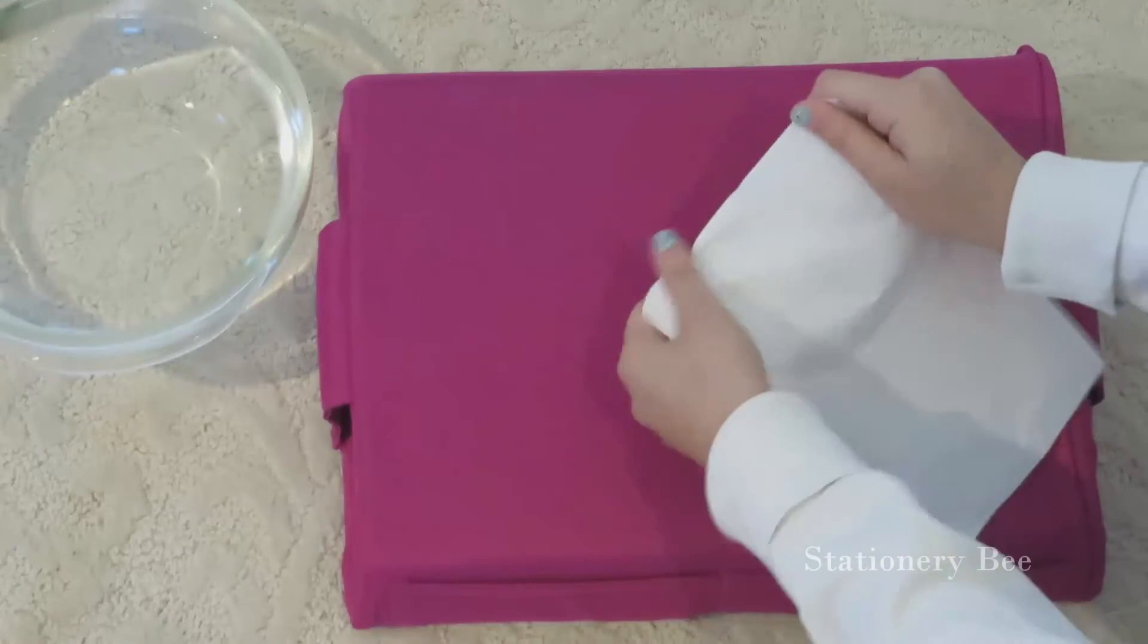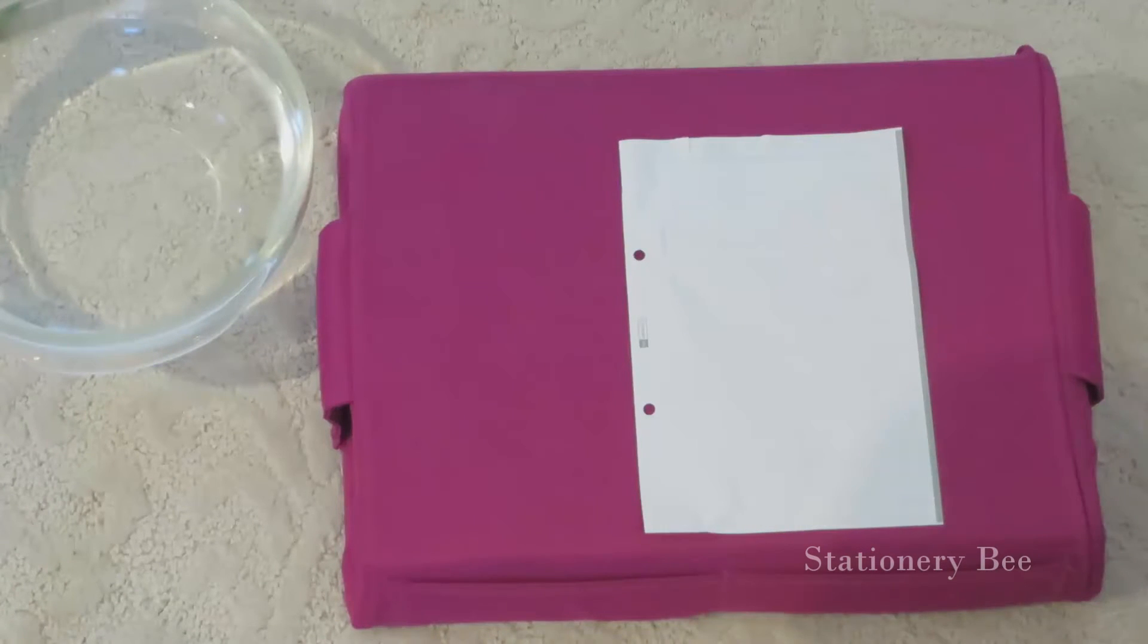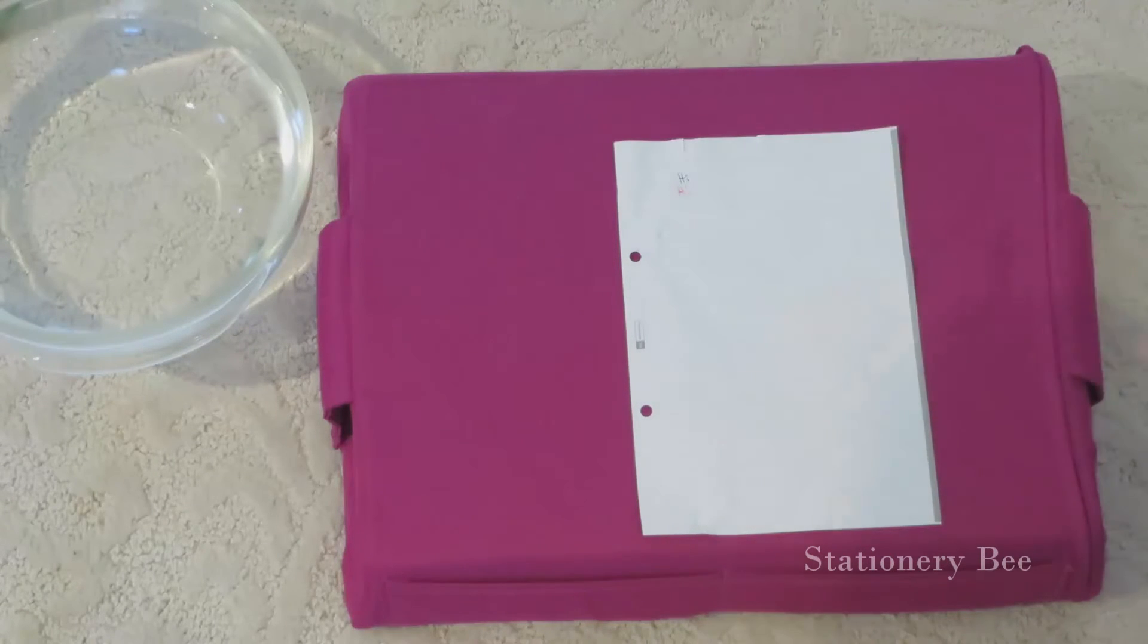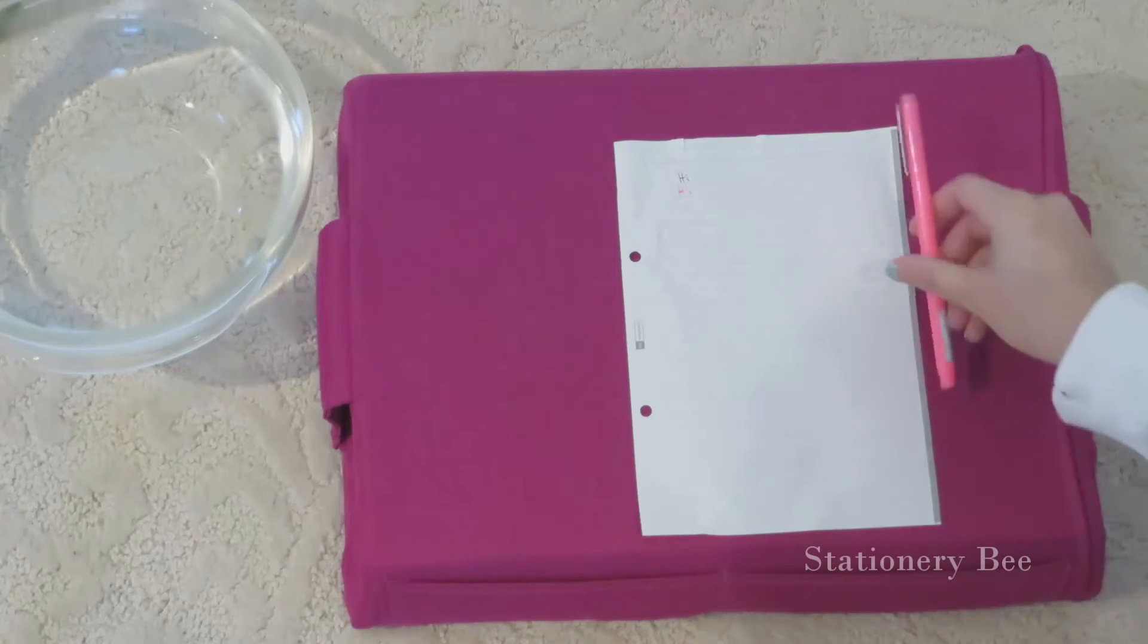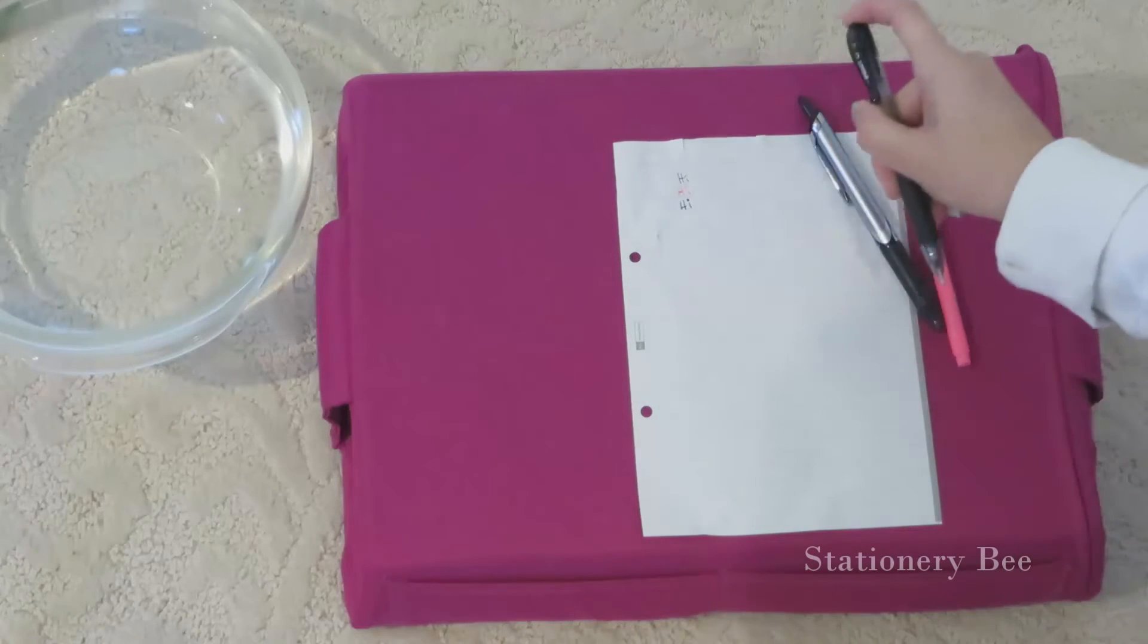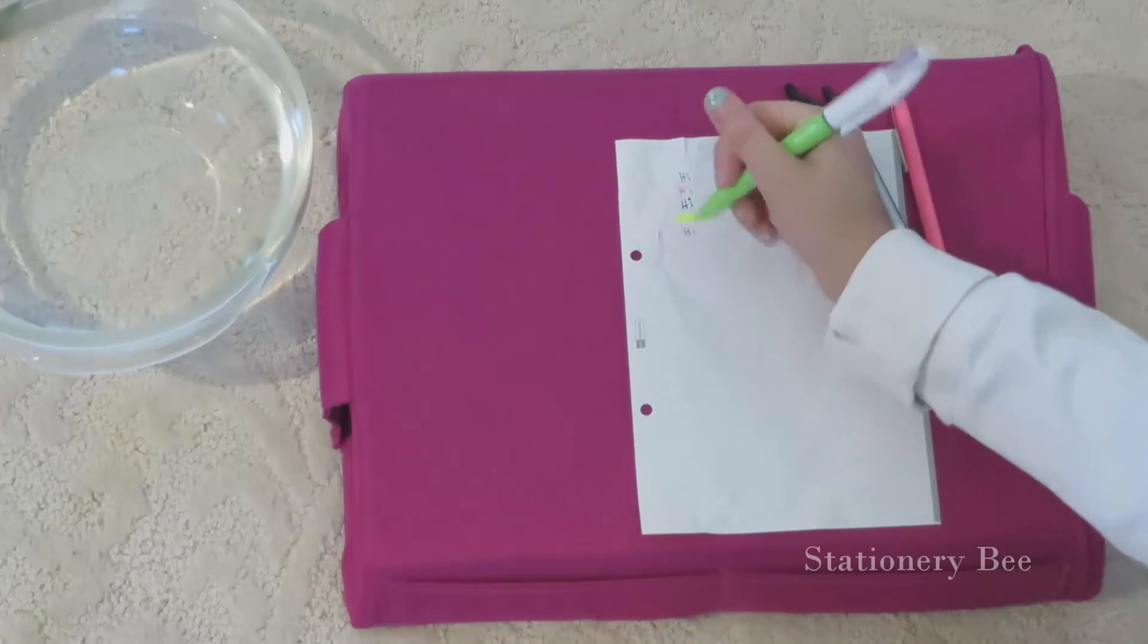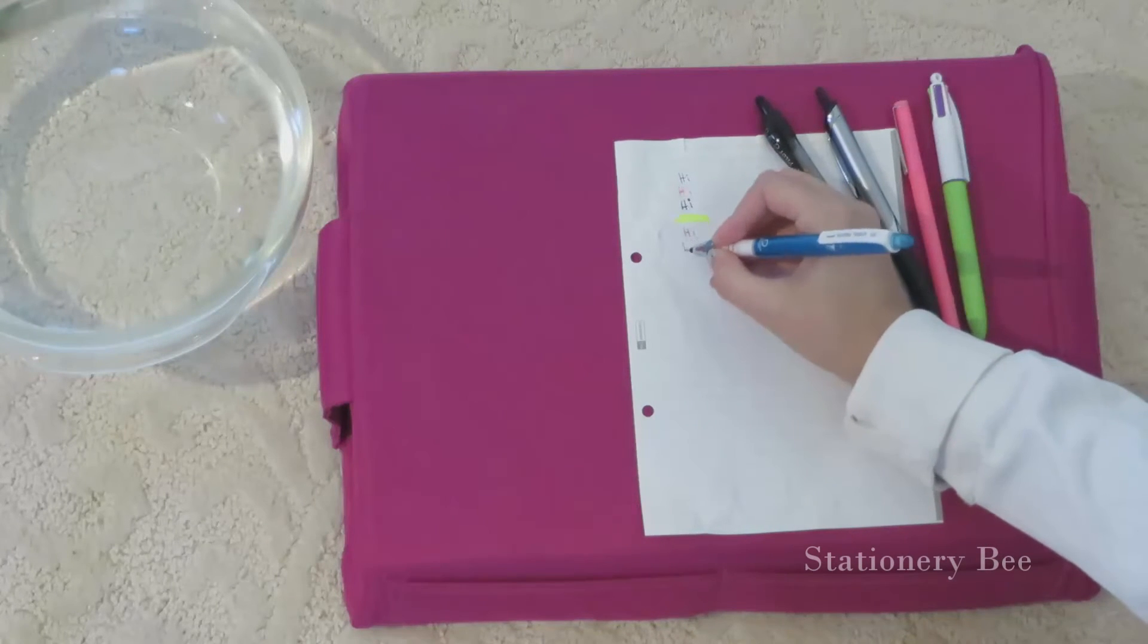All right, so I will just write 'hi' on all of them and see if they bleed. Oh, interesting. So when you use a like some kind of felt pen or a ballpoint pen like the G2, it's very nice and smooth when you write with it. So I just use the pink for this big pen and a pencil. Okay.